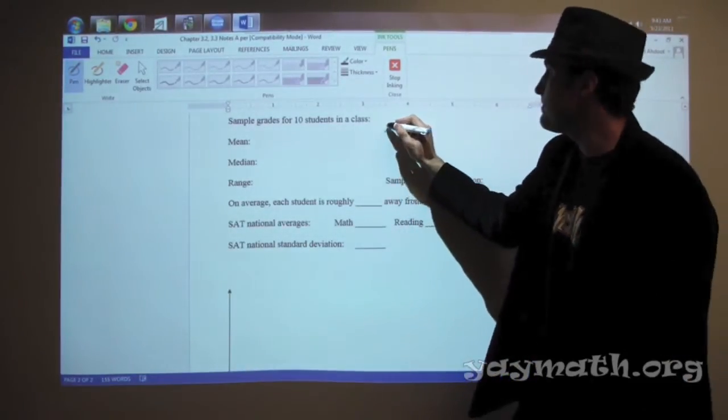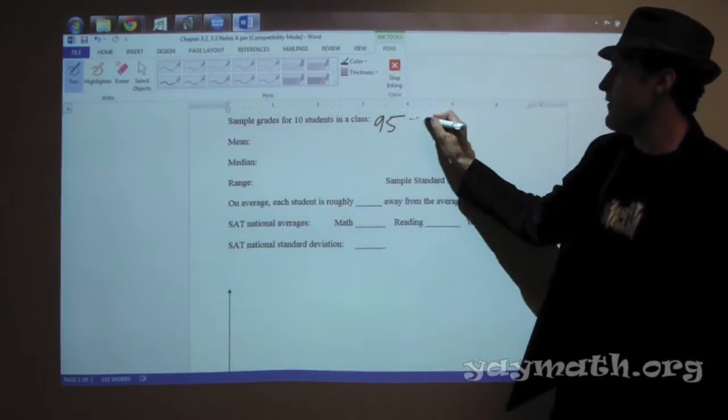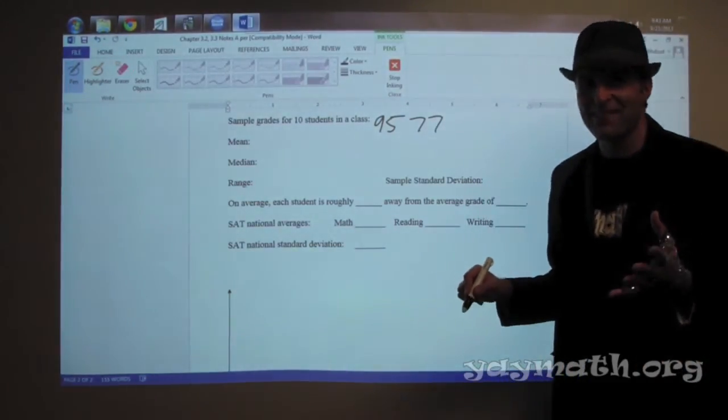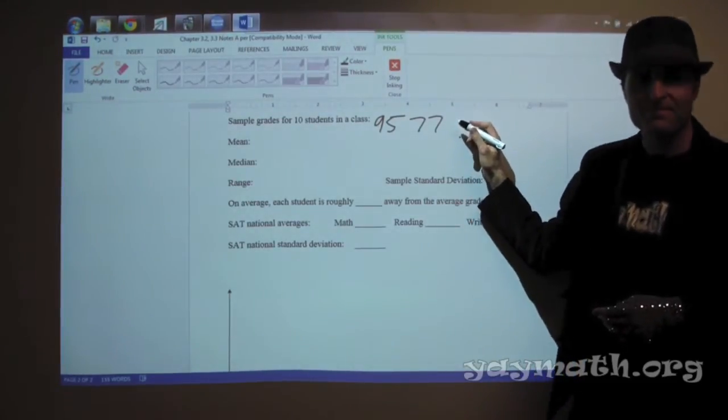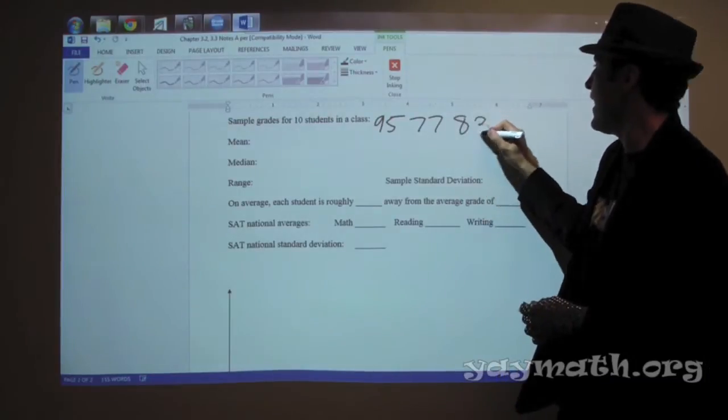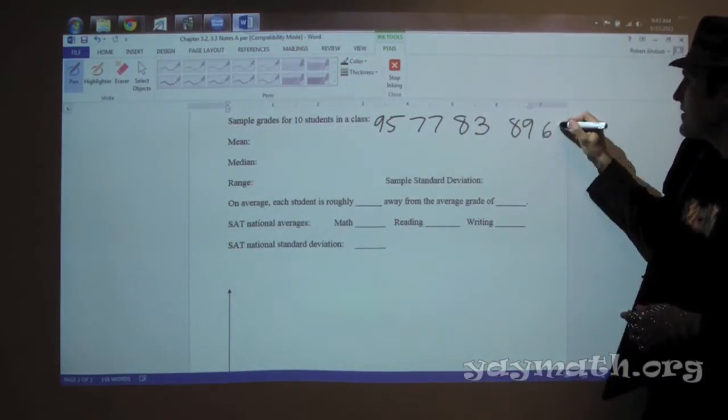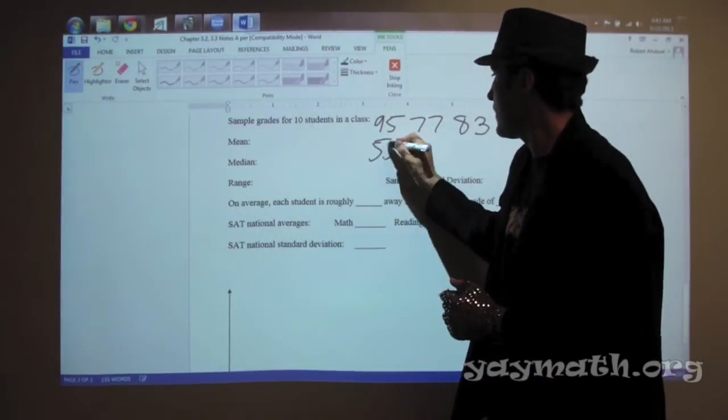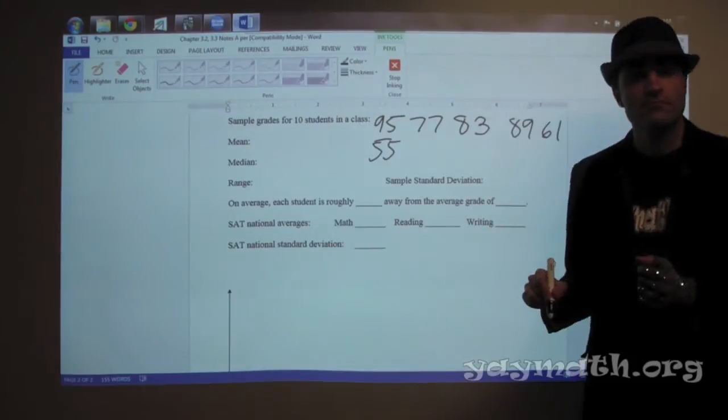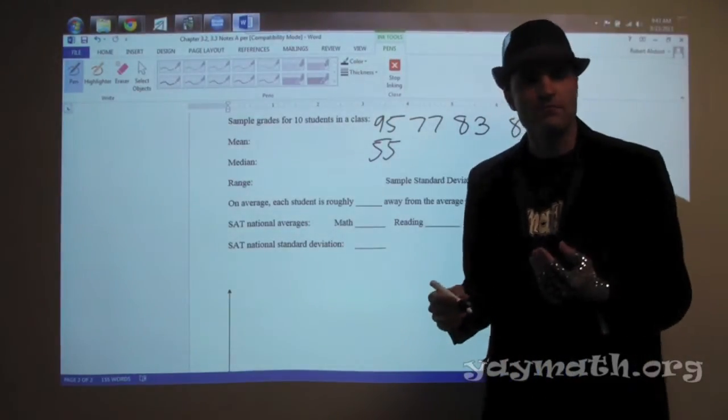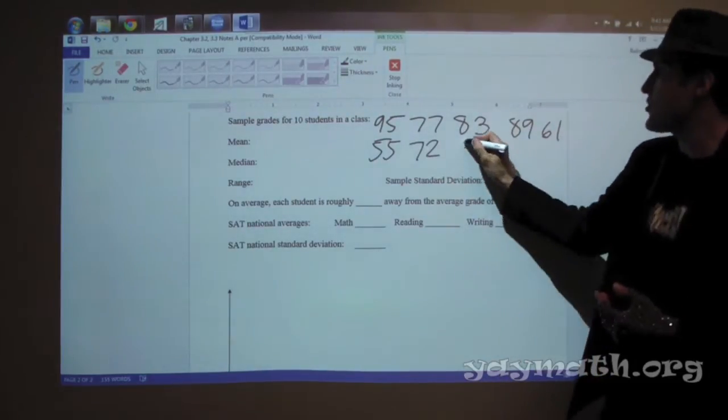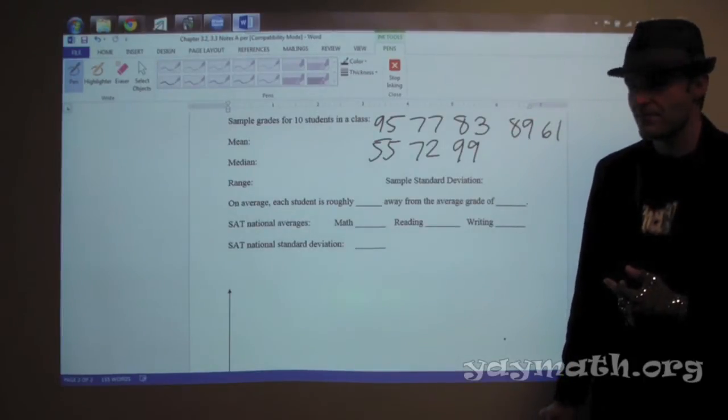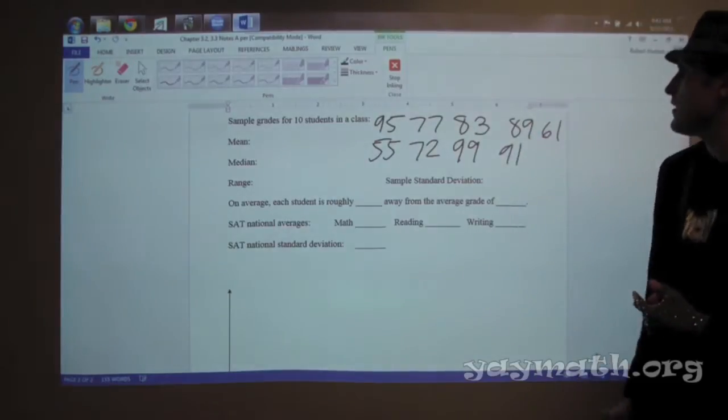95, 77, 83, 89, 61. Five down, five to go. So we've got a fail. 55, because you didn't take it. 72, 99, sure. High performer. 91, so we have another A. 84, okay.